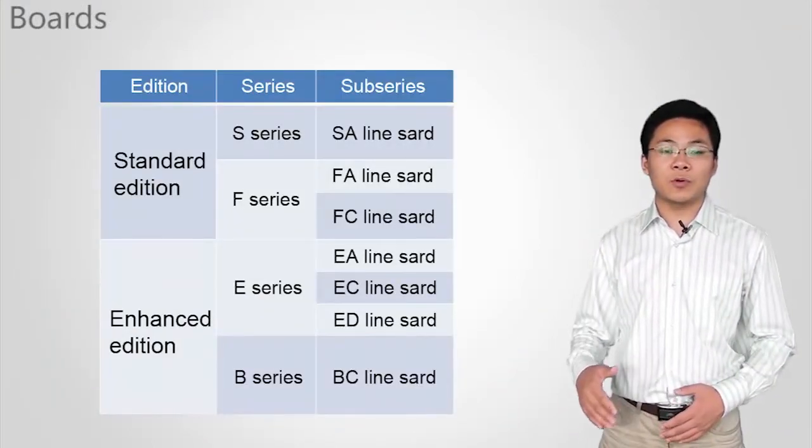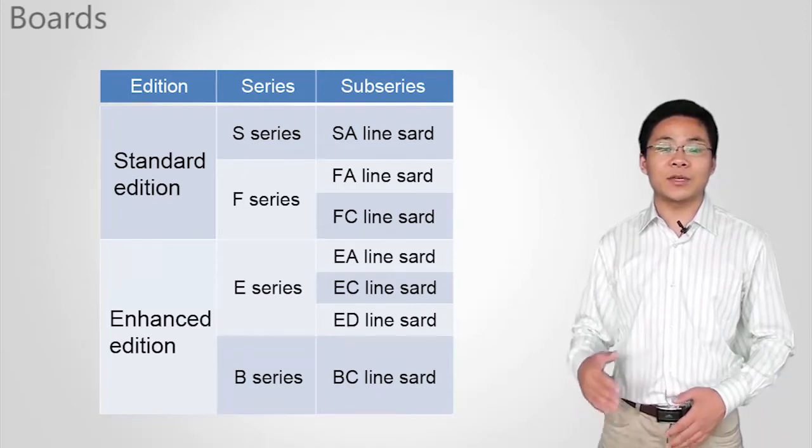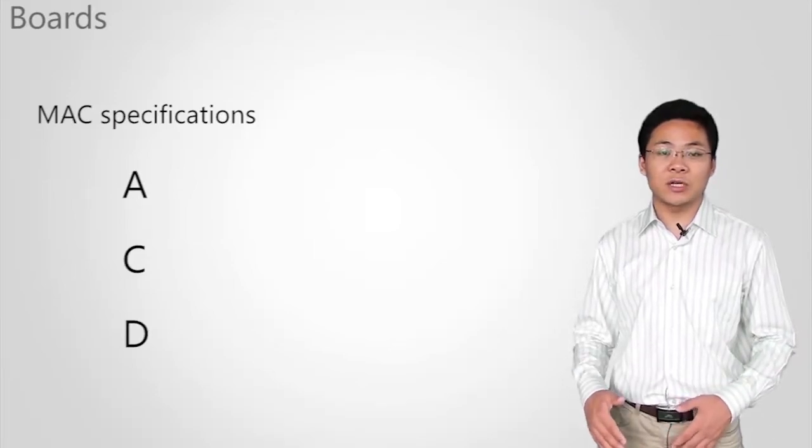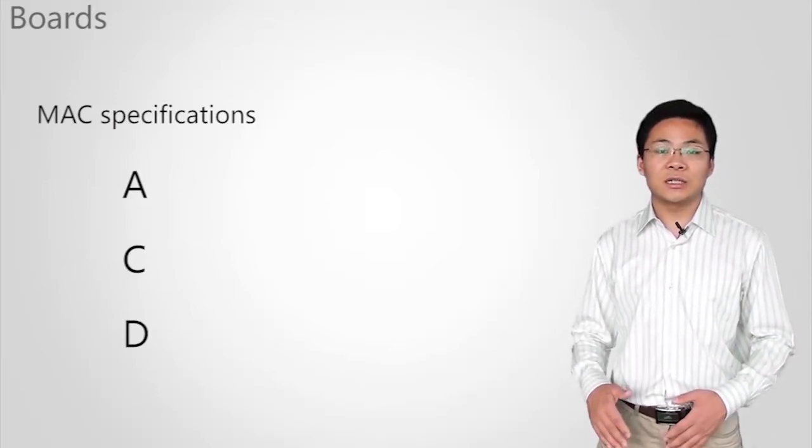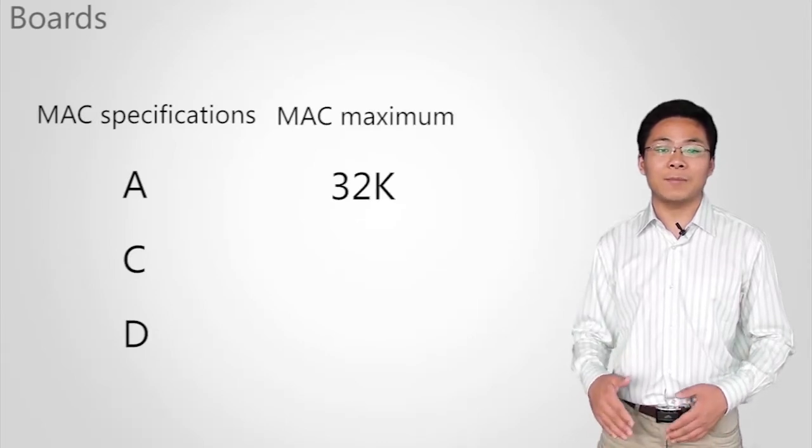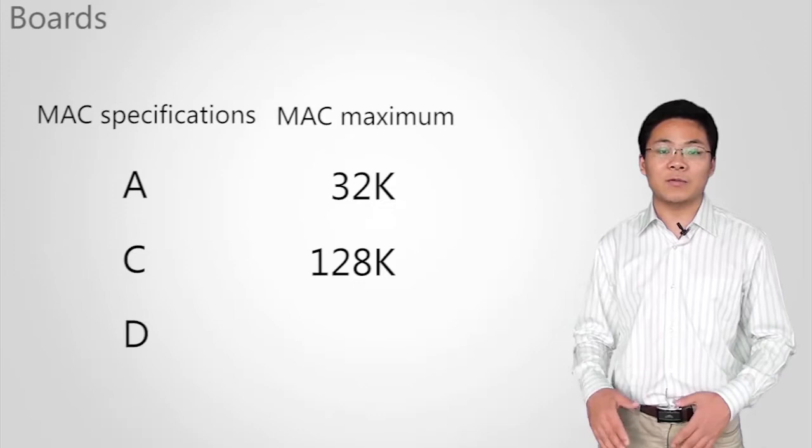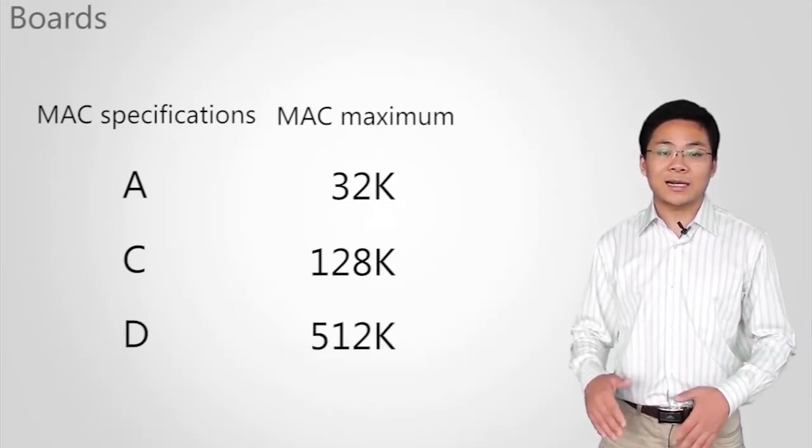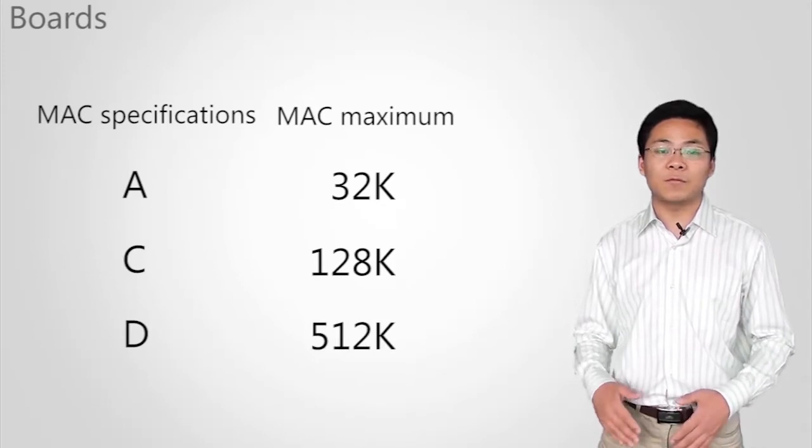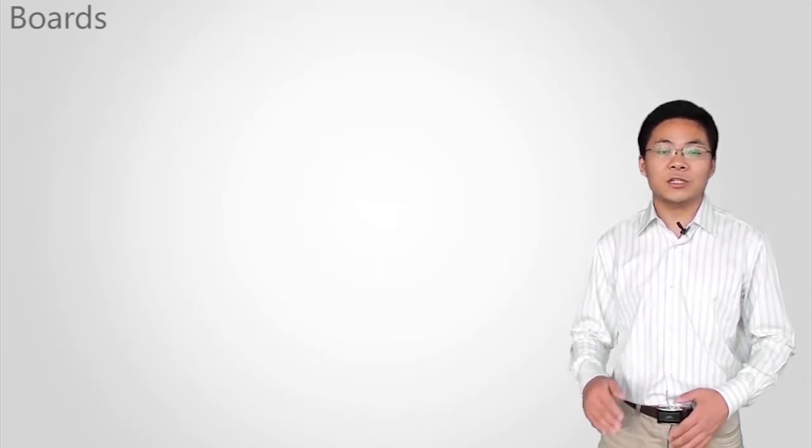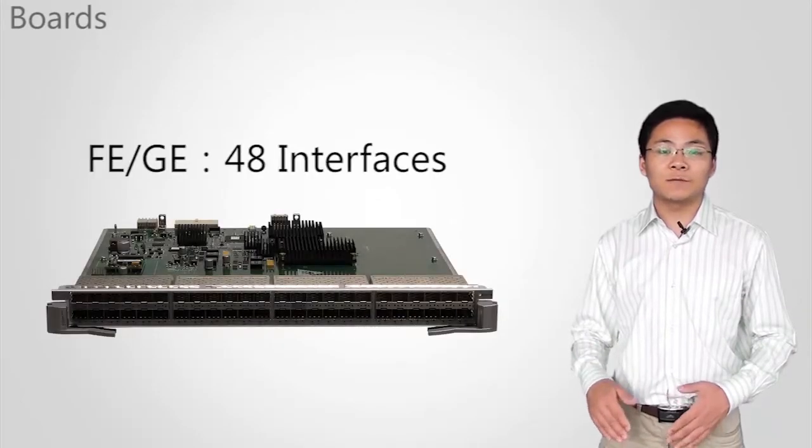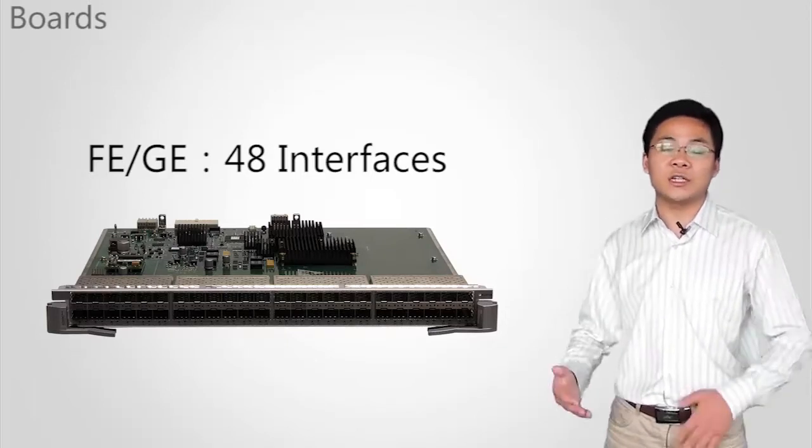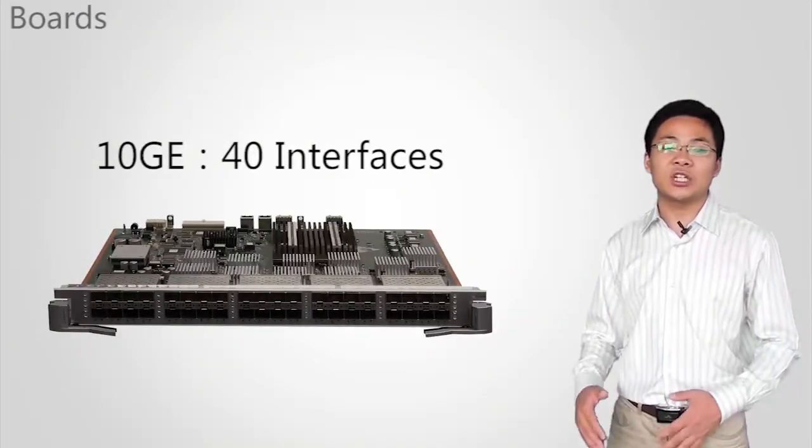The S9700 supports S-series, E-series, F-series, and B-series boards. LPUs have three types of MAC specifications: A, C, and D. Class A supports a maximum of 32K MAC entries. Class C supports a maximum of 128K MAC entries. And Class D supports a maximum of 512K MAC entries. Each interface supports a rate of 10GE. Each LPU supports a maximum of 48 FE or GE interfaces and a maximum of 40 10GE interfaces.